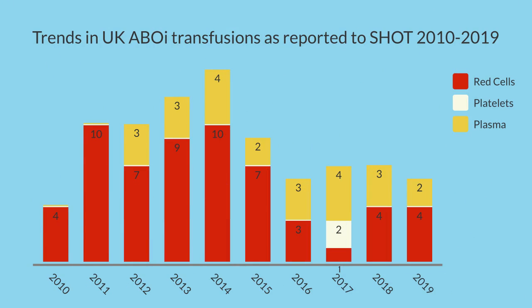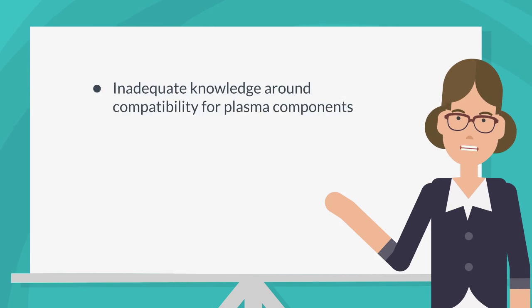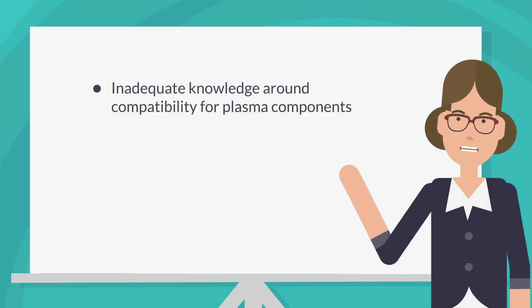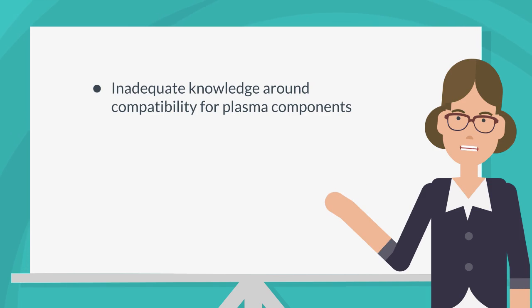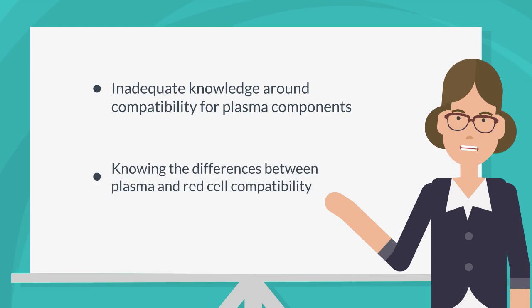Looking at the trends over this time, there is an overall reduction in the number of red cell ABOI transfusions, but ABOI errors in plasma components are occurring at a consistent rate. This is due to a lack of knowledge about compatibility for plasma components and the differences between plasma and red cell compatibility.